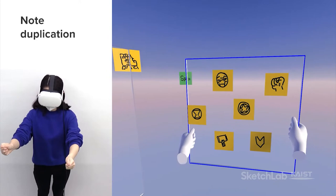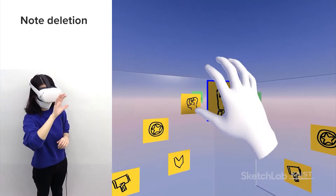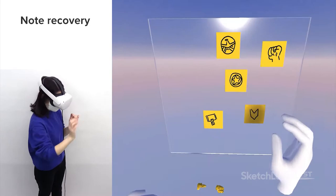With the sacrifice of Black Widow and Iron Man, the Avengers finally defeat Thanos. By picking up and uncrumpling the notes, you can recover them just like physical Post-it notes.